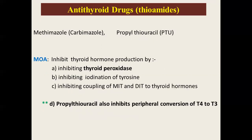The antithyroid drugs are also called thioamides. Examples are methimazole (carbamazole) and propylthiouracil. Their mechanism of action is to inhibit thyroid hormone synthesis by inhibiting the principal enzyme thyroid peroxidase. They also inhibit the iodination of tyrosine residues and inhibit the coupling of MIT and DIT to produce thyroid hormones — so synthesis of T3 and T4 is blocked.